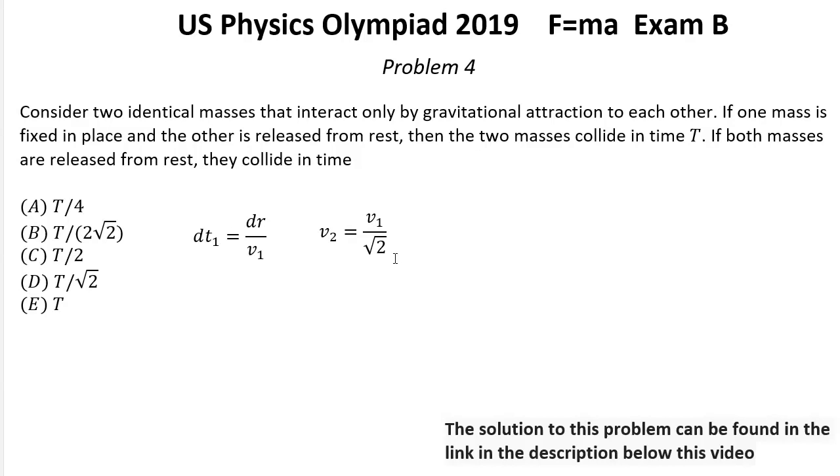It means that time to cover for both masses same distance dr will be delta t2 equal dr over square root from 2 v1.